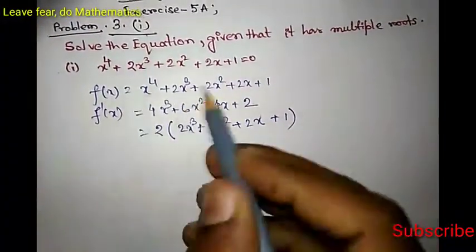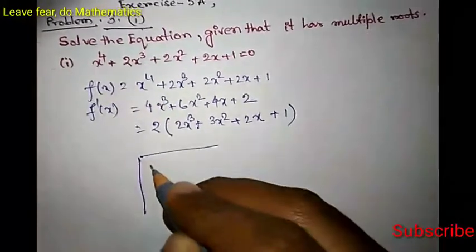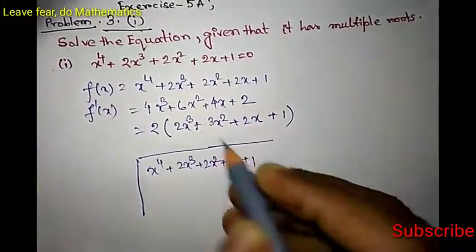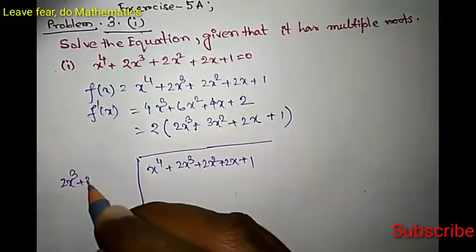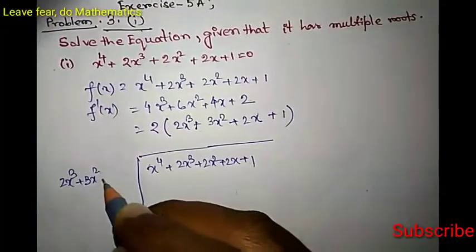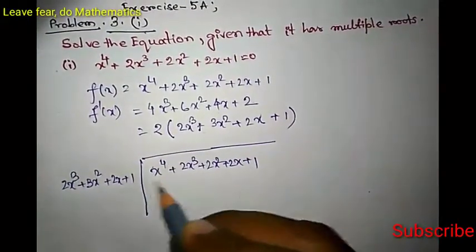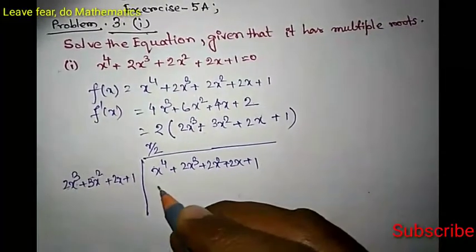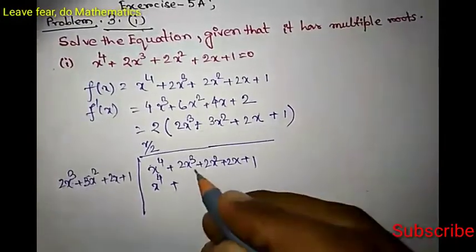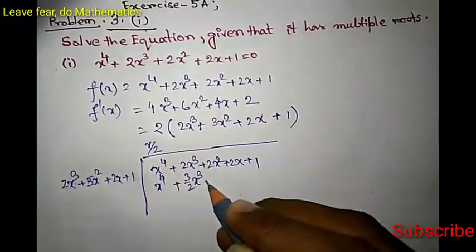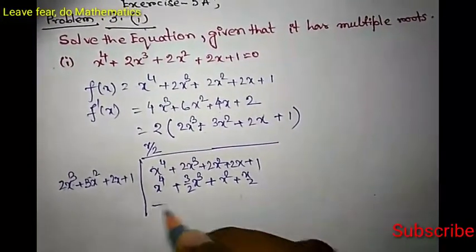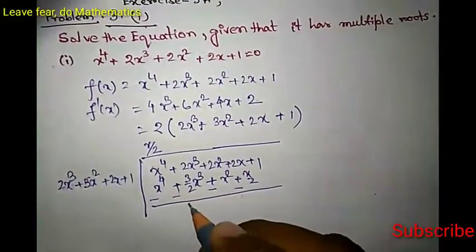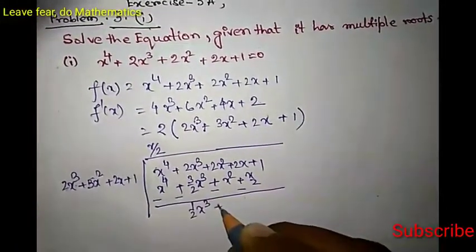Now let us find the highest common factor of f(x) and f'(x). We divide x⁴ + 2x³ + 2x² + 2x + 1 by 2x³ + 3x² + 2x + 1. To match the first term x⁴, we multiply by x/2, giving first term x⁴, then (3/2)x³, then x² + x/2. After subtracting, these two terms cancel and we have (1/2)x³ + x² + (3/2)x + 1.